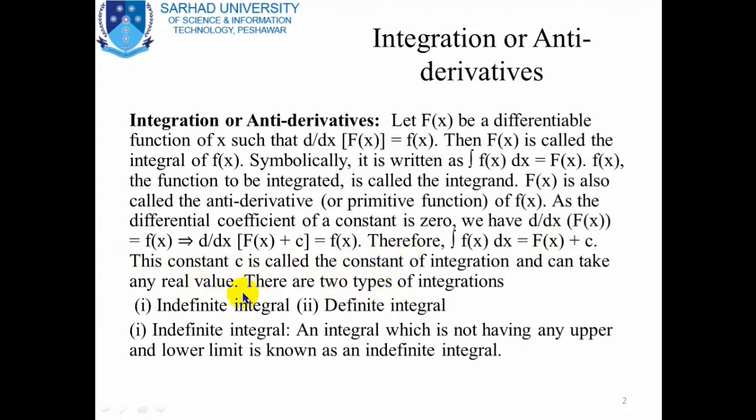There are two types of integration. One is the indefinite integral and the other is the definite integral. Note that integration is actually called anti-derivative — the process for finding the anti-derivative of a function is called integration. The geometrical interpretation of the derivative is the slope of a function, while the geometrical interpretation of integration is the area of a function. The indefinite integral is an integral which does not have any upper and lower limit.